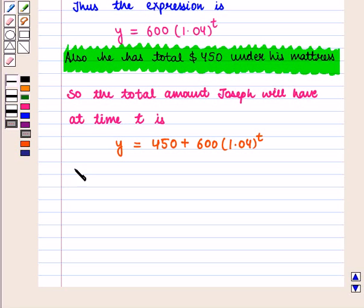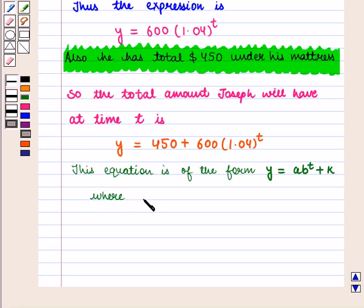This equation is of the form Y equals A into B raised to power t plus K, where K is the vertical shift.